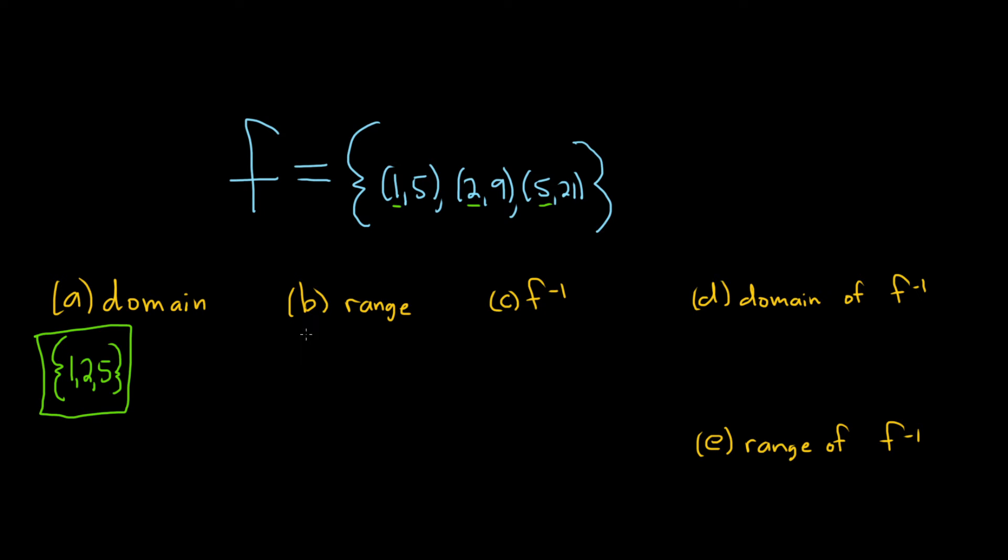The range is the set of outputs. It's all the y-coordinates in this case. So it would simply be 5, 9, and 21. So again, the correct notation is to use these curly brackets. So {5, 9, 21}. That would be the range of this function.